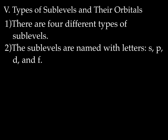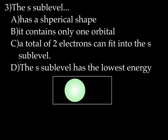Let's go back and talk about sublevels and their orbitals. There are four different types of sublevels, named with letters: S, P, D, and F. Energy levels are named with numbers 1 through 7; sublevels are named with letters. The S sublevel has a spherical shape — like a 3D circle. It contains only one orbital, and since each orbital holds two electrons, a total of two electrons can fit in an S sublevel. The S sublevel has the lowest energy of any of the four sublevels. The P sublevel has a dumbbell shape and contains three orbitals, so it can hold a total of six electrons. The P sublevel has higher energy than the S sublevel.